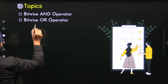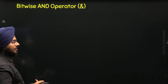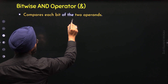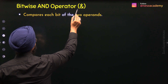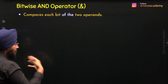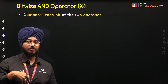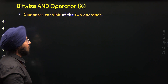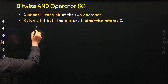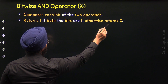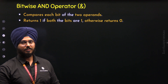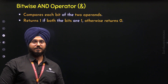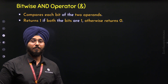Let's start with the first operator, which is the Bitwise AND Operator. The Bitwise AND Operator is the operator that allows us to compare each bit of the two operands. It is represented by the single ampersand symbol. It cannot be used directly to compare the operands — it is used to compare the bits of the operands, which is why it is called a Bitwise Operator. It returns 1 if both the bits are 1; otherwise it returns 0. It is quite similar to the Logical AND Operator, but the Bitwise AND Operator works on the bits of the operands.